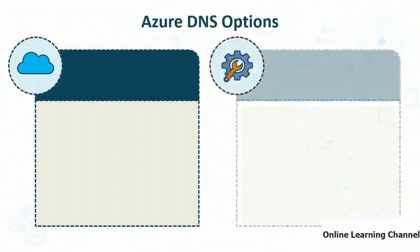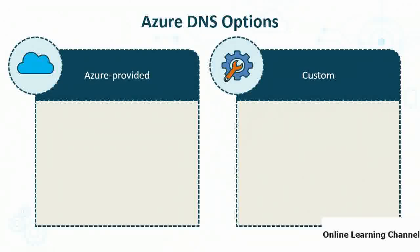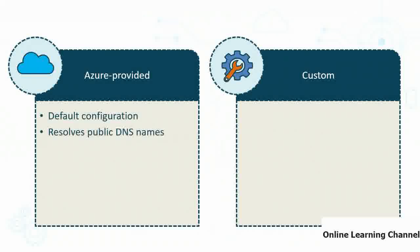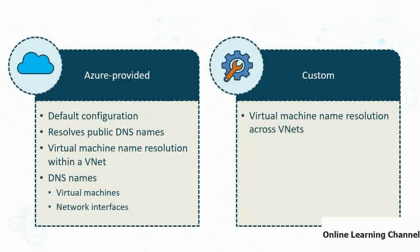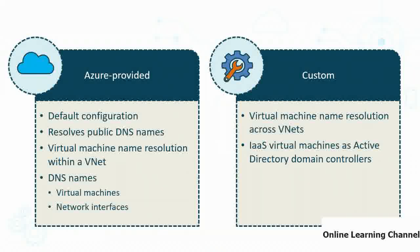In Azure DNS, you can use Azure-provided DNS servers configured at the VNet level — the default, used to resolve public DNS names and virtual machine names within the VNet. You can also configure custom DNS server settings for VM name resolution across VNets or for IaaS Active Directory domain controllers that use DNS for name resolution. You can also use DNS forwarding to Azure when using your own custom DNS server, giving you the best of both worlds.